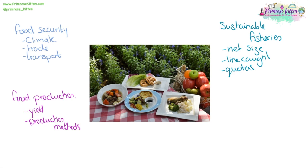We need to consider things like net size — are we catching fish before they've had a chance to reproduce? Are we catching too many? Do we need to move to line-caught fish so we don't catch endangered species? We also need to look at fisheries quotas. We can also look at new ways of developing food, for example culturing microorganisms, which we can use as a food source.